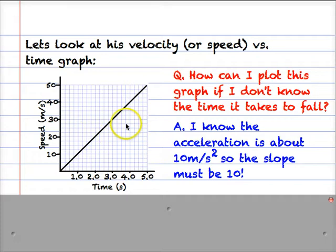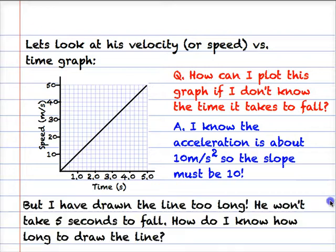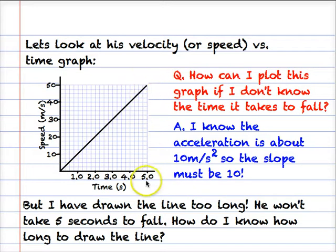So this graph does represent the motion of the diver, but I've drawn the line way too long because there's no way that this diver is going to take 5 seconds to hit the water. So at the moment the slope of the graph is right, but the graph is too long.